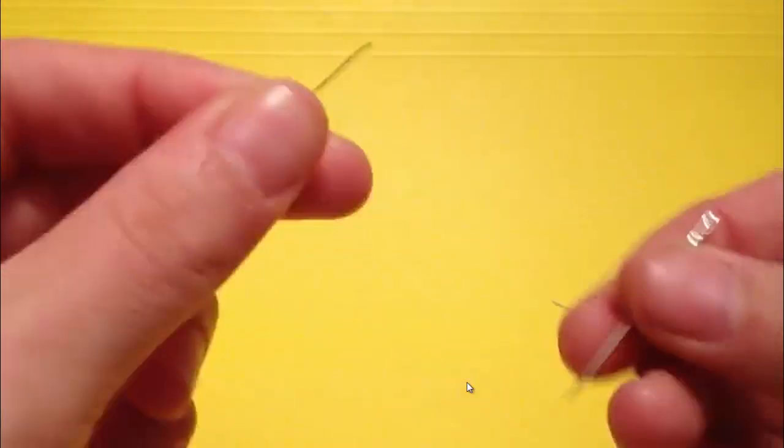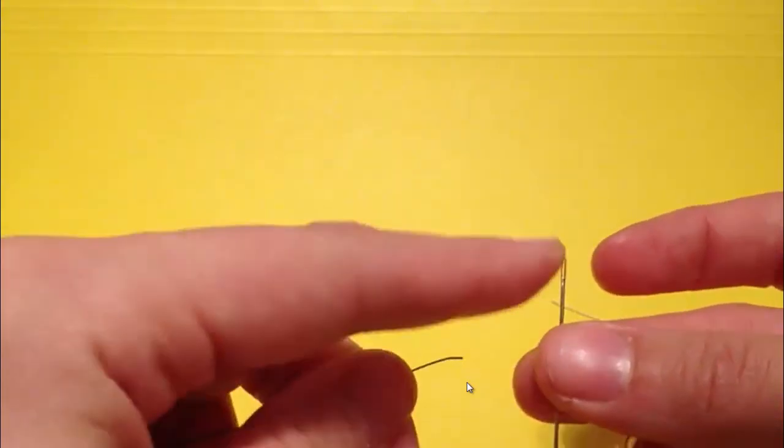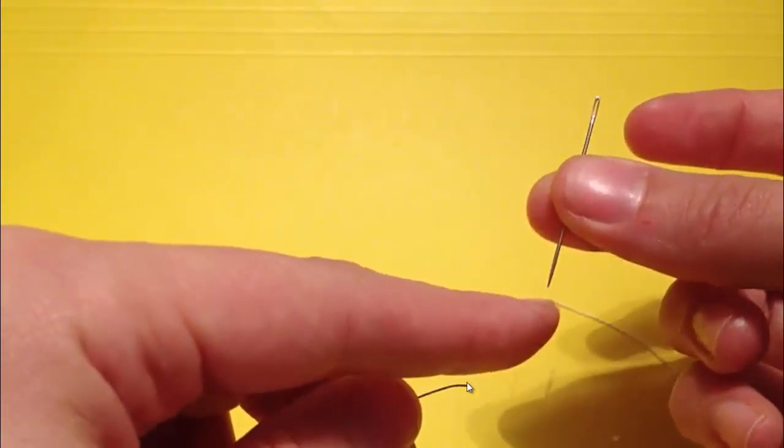You have your thread, which is as long as your arm. Now there are two ends of the needle: the eye, which has the hole, and the point, which will hurt.